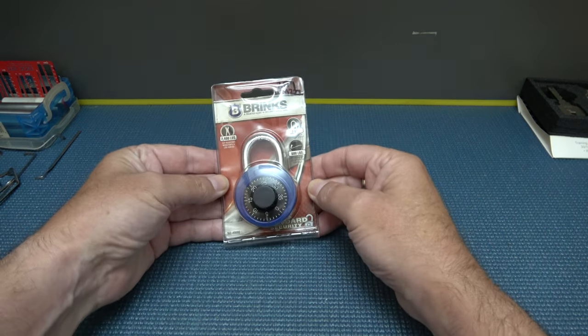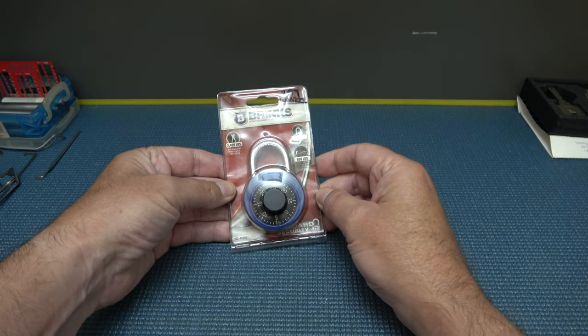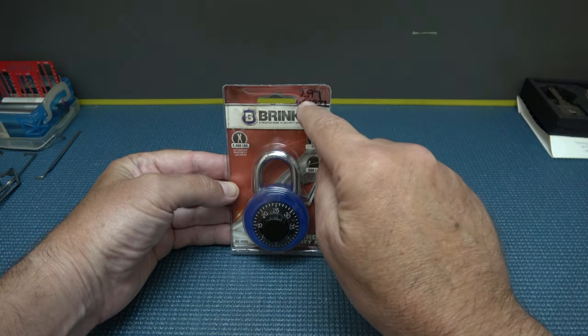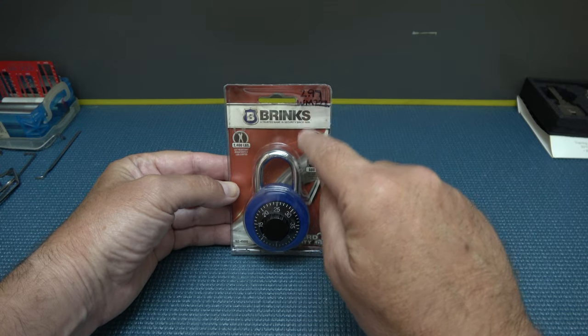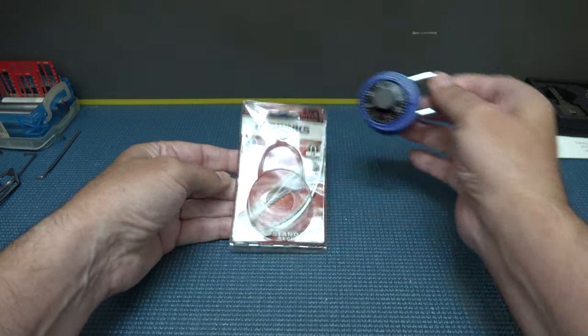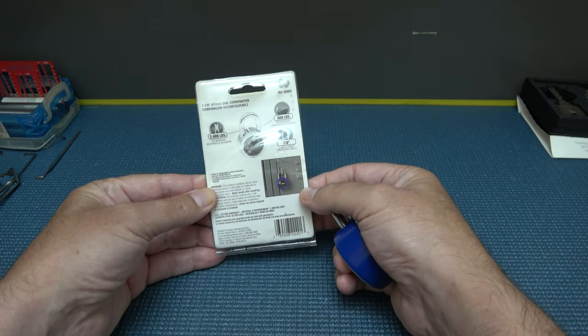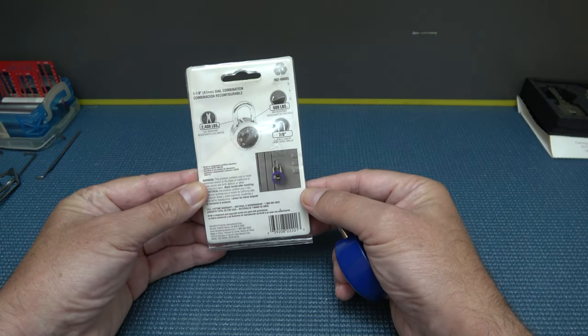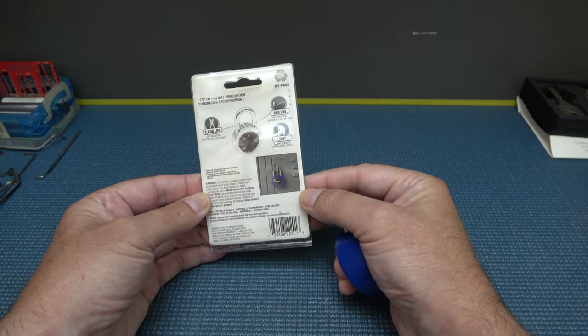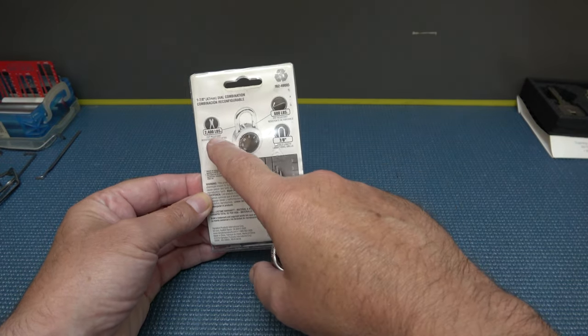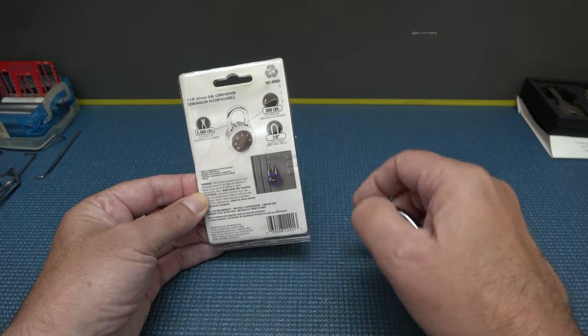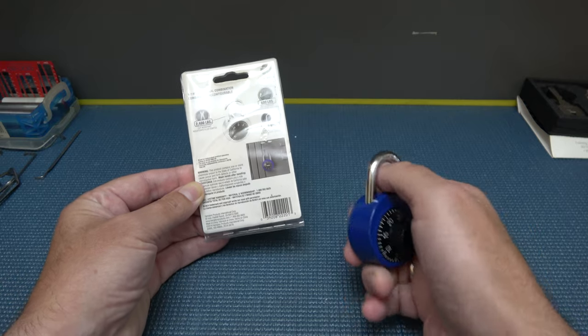So what do we got here? We got this Brinks. Don't even remember where I got it, but obviously it was a thrift store or something. It's got a little price written in pen, $2.97, a combination lock. Looks like I already opened it up and it must have been in my drawer for quite some time. Your basic, very cheap Brinks Combination Lock. 2,000 pounds it would take to cut it. 600 pounds with a crowbar.